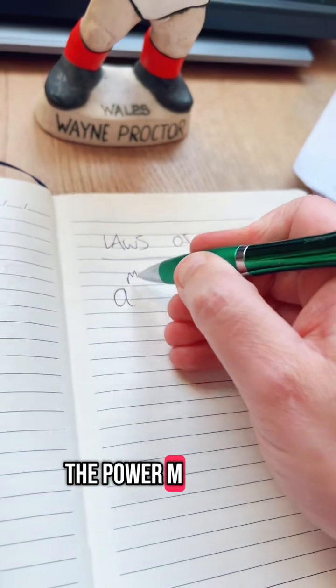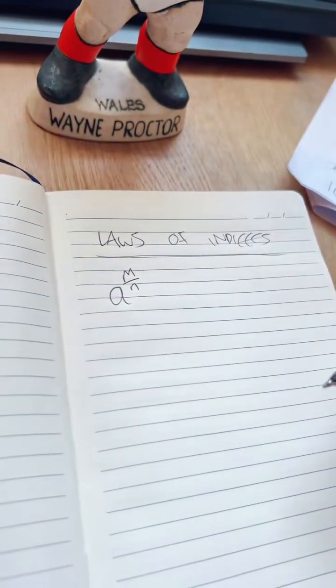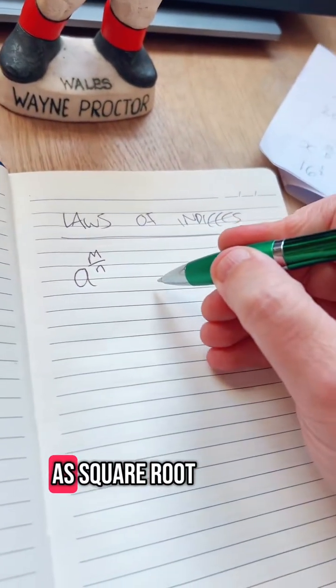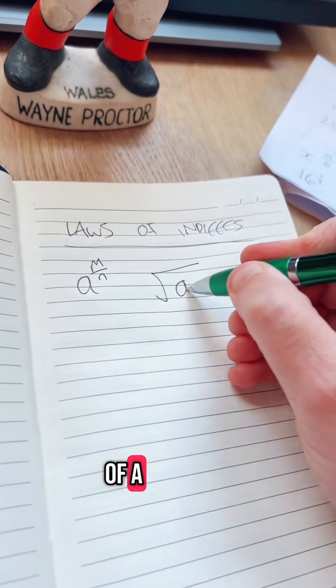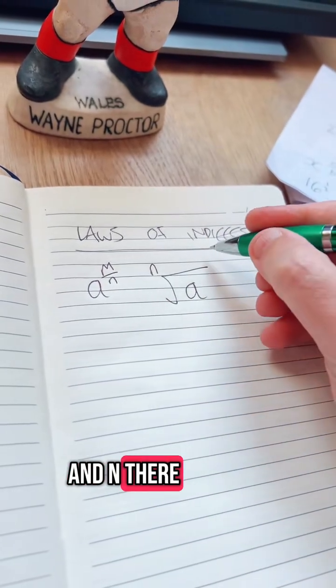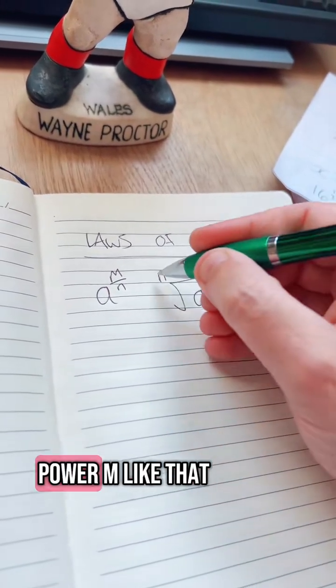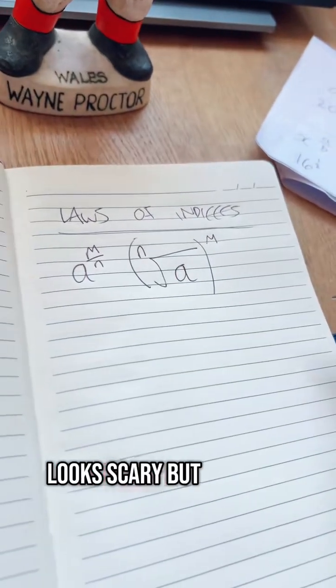A to the power M divided by N. That's the same as the N-th root of A, all to the power M like that. I know it looks scary, but it's not.